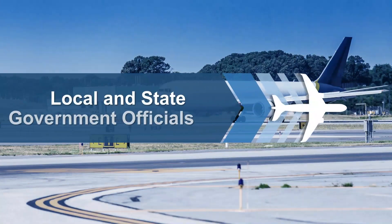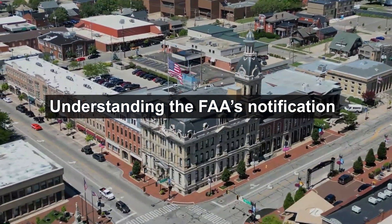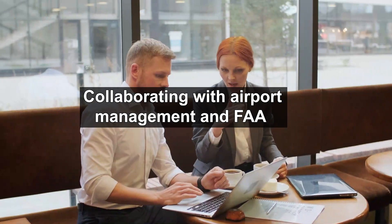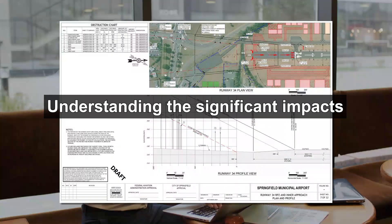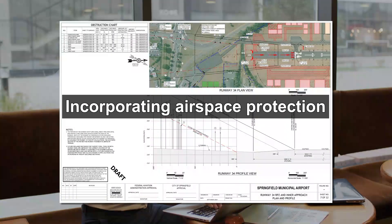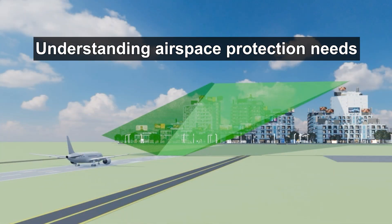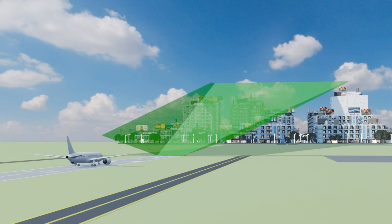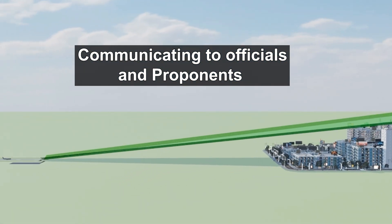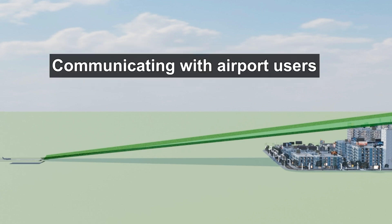Best practices for local and state government officials include: understanding the FAA's notification criteria; collaborating with local airport management and the FAA; understanding the significant impacts on airport operations and the local community; and incorporating airspace protection criteria in local height zoning and building permitting. Best practices for airport management include: understanding your airport's airspace protection needs; collaborating regarding local height zoning and airspace regulations; communicating to local government officials and proponents; providing ongoing communication with local municipalities; and communicating with airport users.